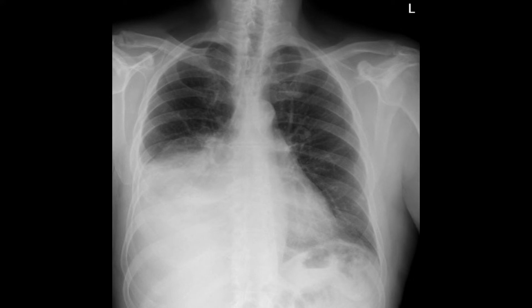The trachea is shifted to the left. The costophrenic and cardiophrenic angle of the right lung is obliterated. The upper margin is concave. The rest of the lung fields are normal.